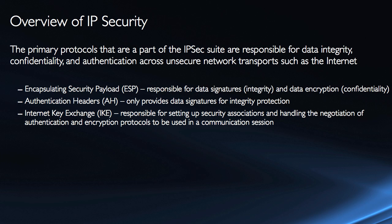The three main protocols are: ESP, or Encapsulating Security Payload, which is responsible for both digital signatures for integrity and data encryption for confidentiality purposes. Authentication Headers, or AH, on the other hand, only provides digital signatures, which give integrity protection. They also give non-repudiation — meaning one side of the communication cannot deny that they were a part of the communication because it's digitally signed using private keys. And then you have Internet Key Exchange, or IKE. This is responsible for setting up security associations, and handling the negotiation of the authentication and encryption protocols used in a communication session, and the initial exchange of the keys used for encryption and decryption.